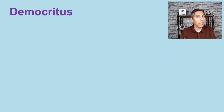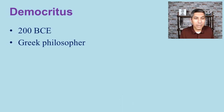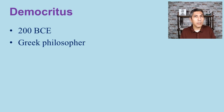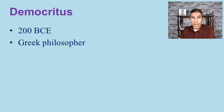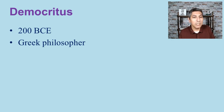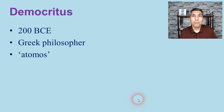Our story of atomic discovery starts a long time ago — over 2,000 years ago — with a Greek philosopher named Democritus. Philosophers back then thought about the nature of the universe, and most believed that if you took a sample of matter and cut it in half, you could keep repeating that process forever. Democritus was the first philosopher we know of who said that eventually you'd get to a piece of matter so small you could no longer cut it in half and still have that material.